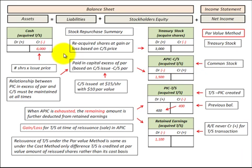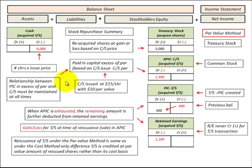When we reissue or retire Treasury stock using the par value method, we use the same procedures as the cost method for Treasury stock. The only difference is that Treasury stock is credited at the par value of the reissued shares rather than its cost basis. There is a video available on the cost method that you can review — just substitute in the par value for your Treasury stock instead of the cost basis.